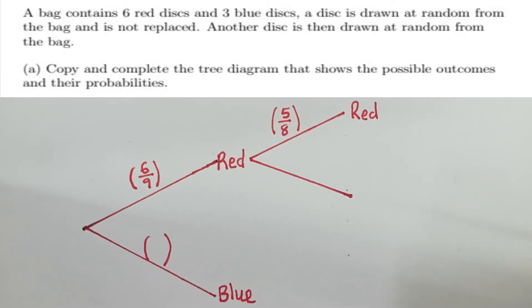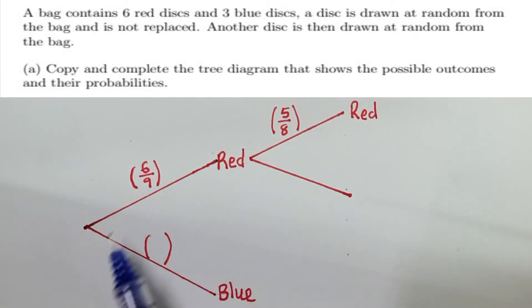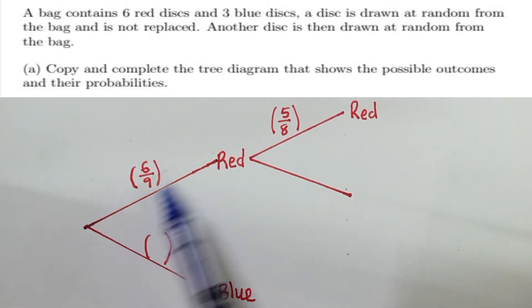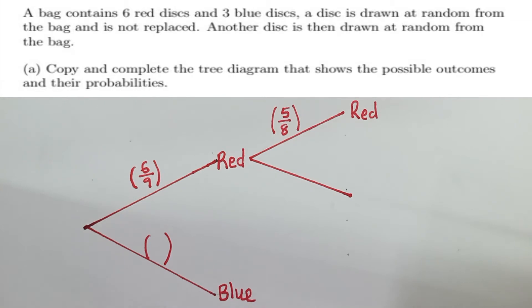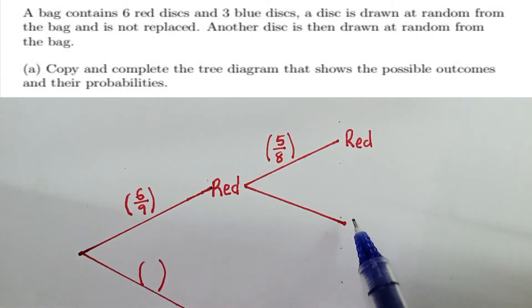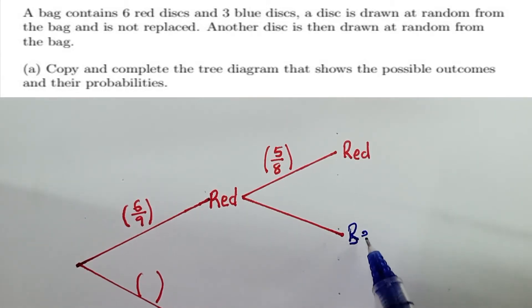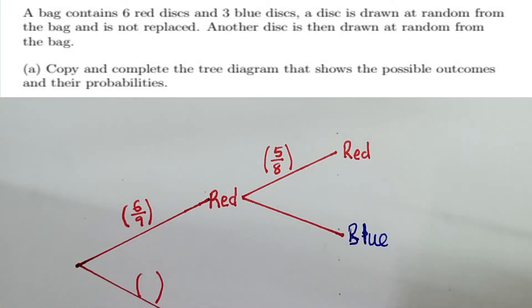If you can see nicely, we've got this tree diagram here. This part has been done for us. And they want us to finish. So the first thing must be to write blue here — I mean blue, sorry. Blue here.